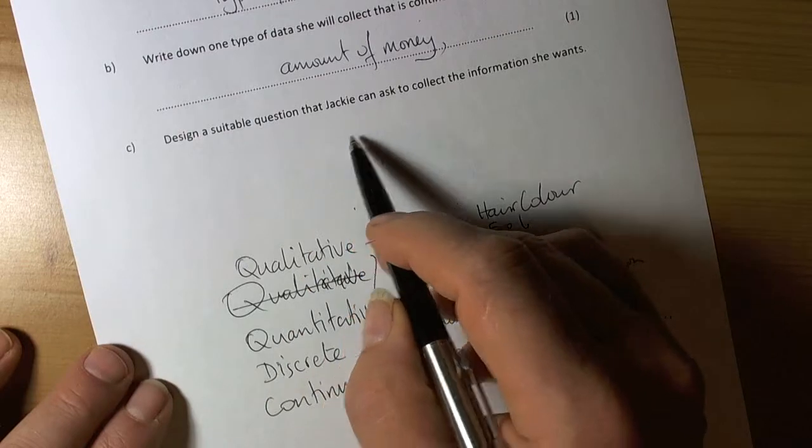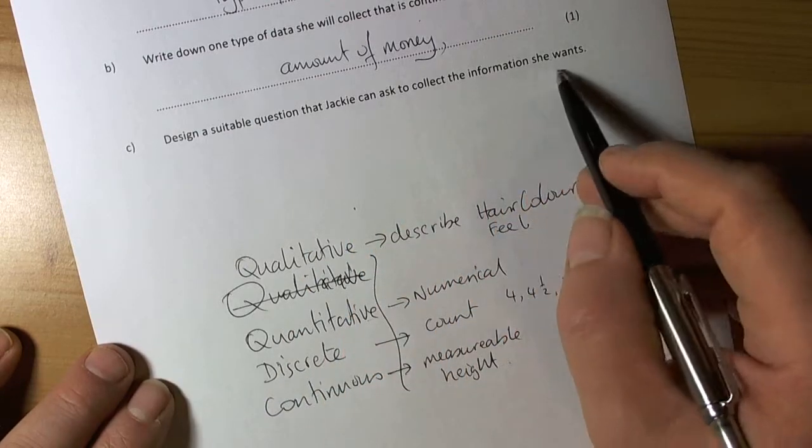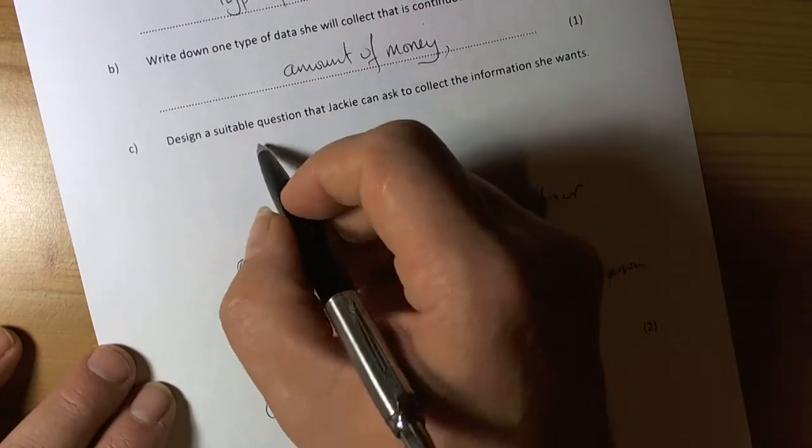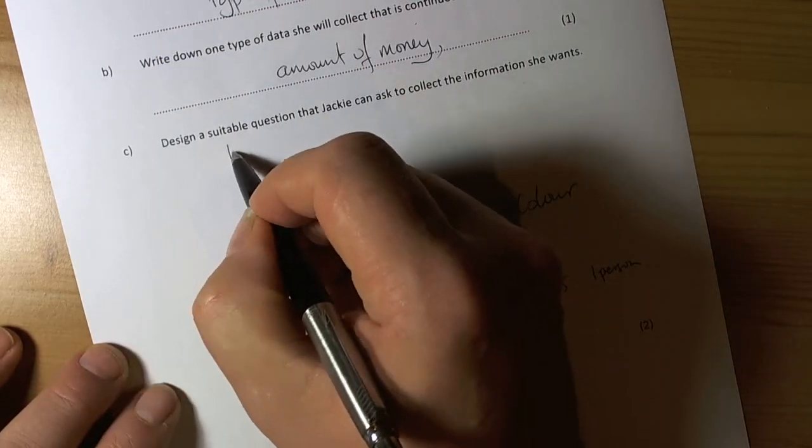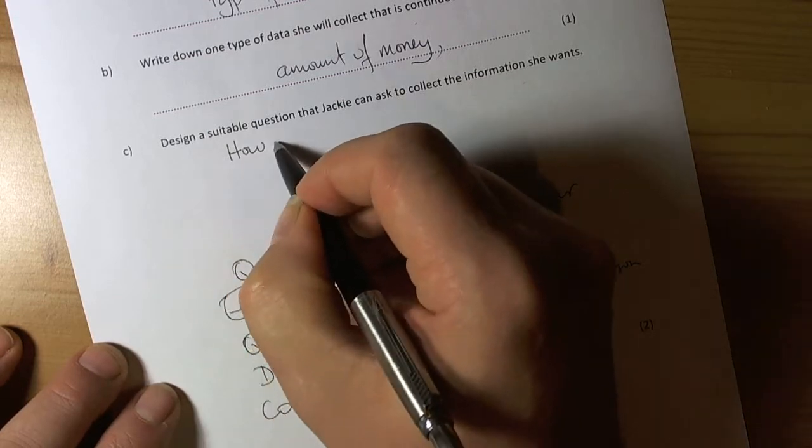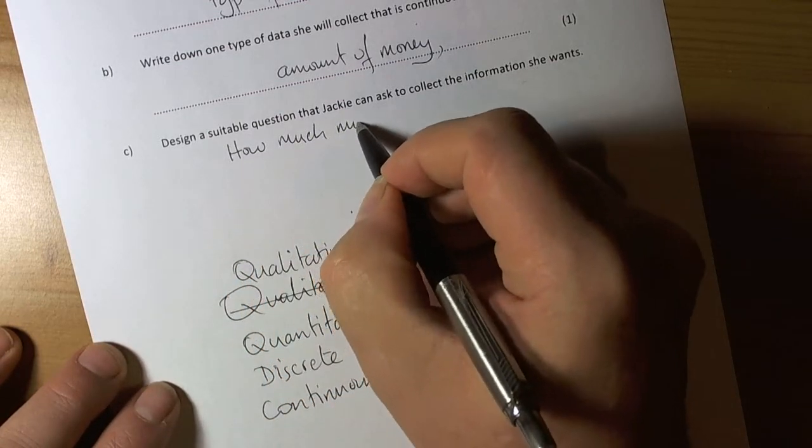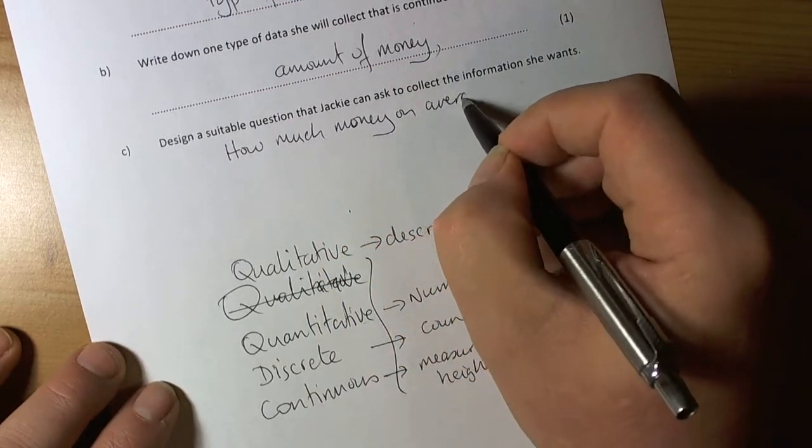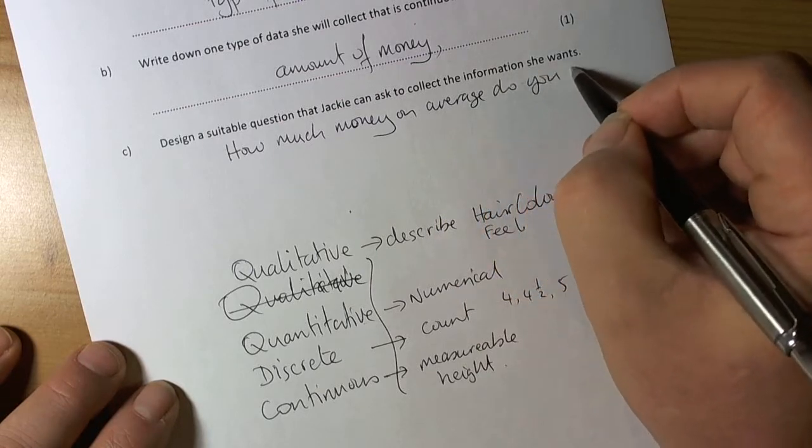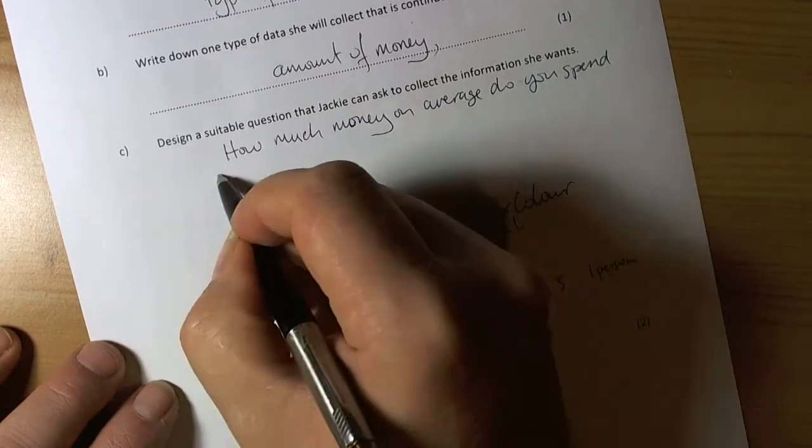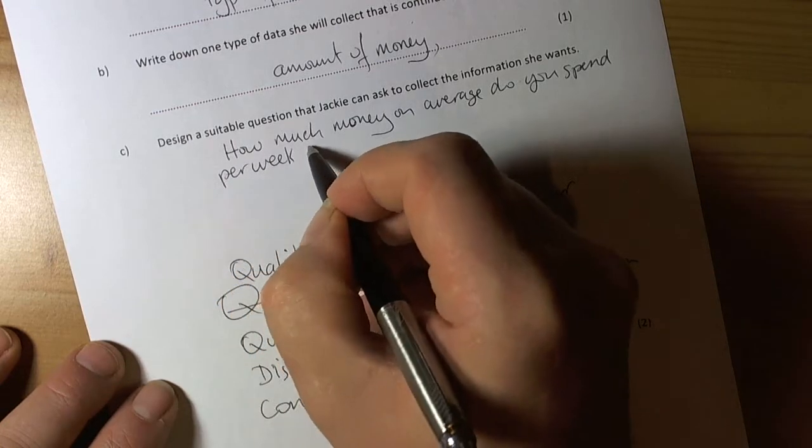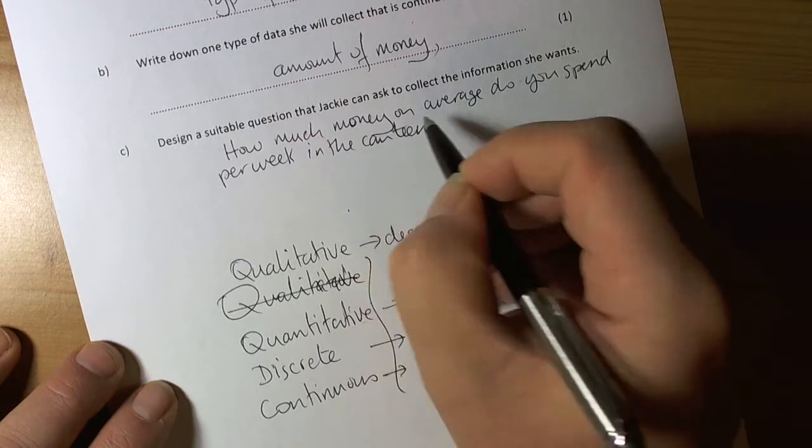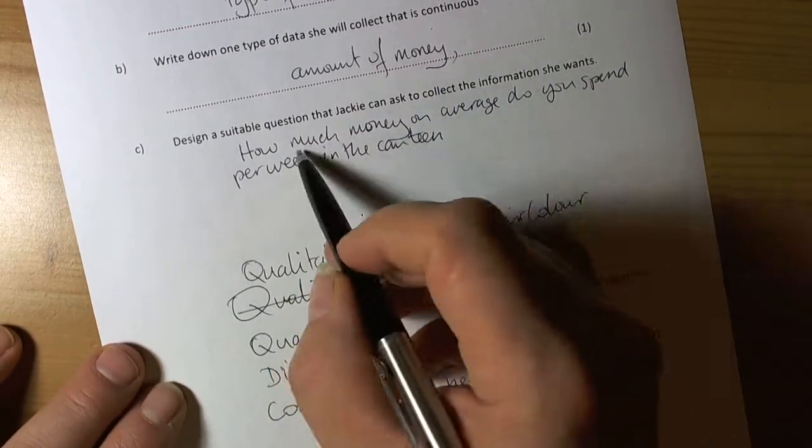It then says design a suitable question that she could ask to collect the information. The key thing about questionnaires is there must be a timeframe. So we'd be saying something like, 'How much money on average do you spend per week in the canteen?' We've got the timeframe in - it's per week - and how much money.